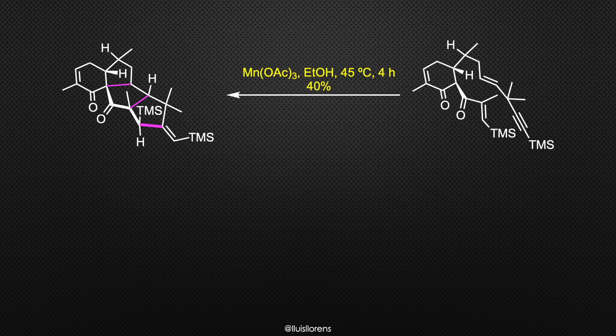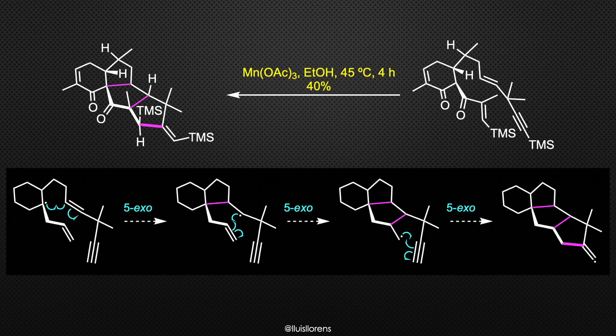Treatment of the enine with manganese triacetate delivered the product of the radical cascade reaction as a single diastereomer.